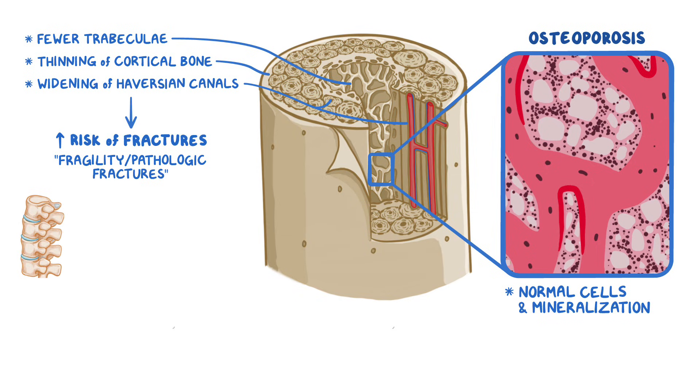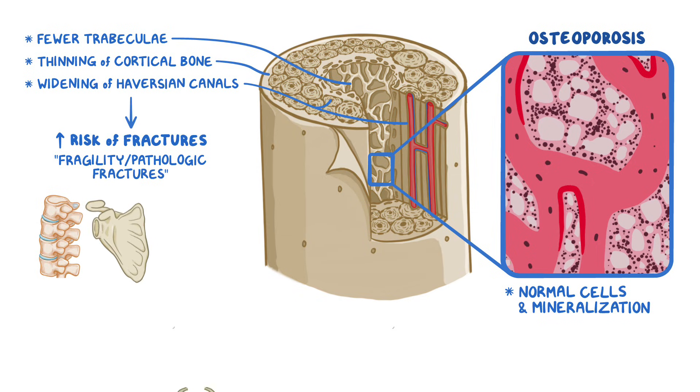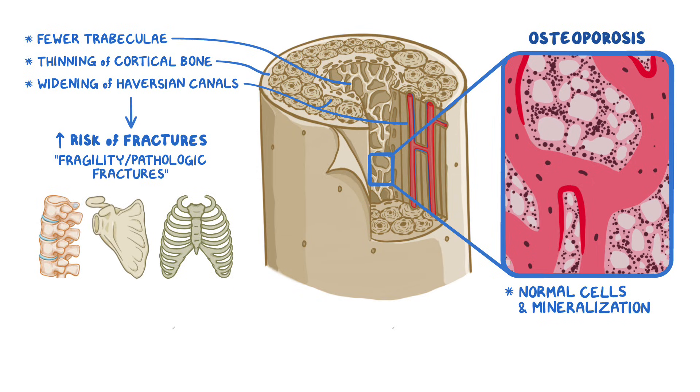Some bones, like the vertebrae, shoulder blades, and ribs, consist mainly of spongy bone, so they're at great risk of fragility fractures.